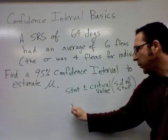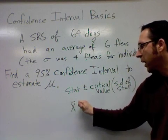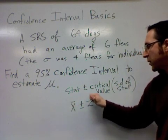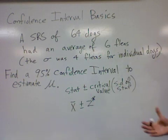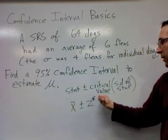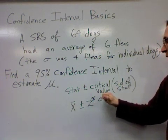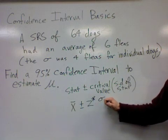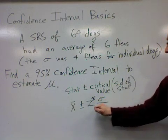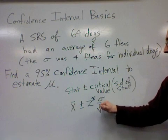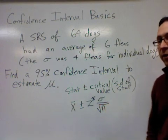In symbols it will look like this: our sample average plus or minus our standard deviation upper critical value times the standard deviation of the statistic, which is the individual standard deviation divided by the square root of how many are in our sample.